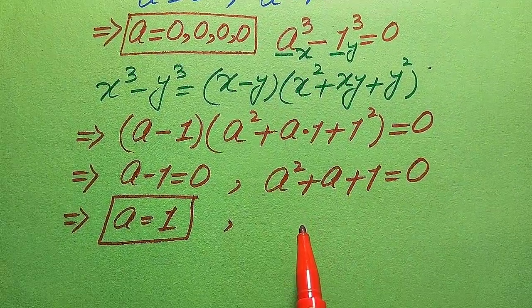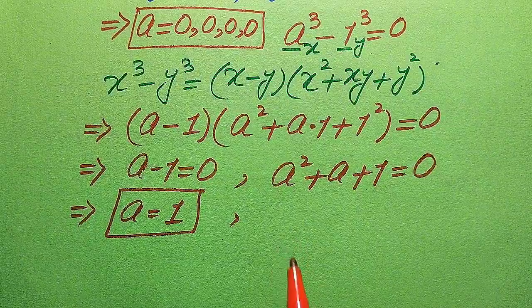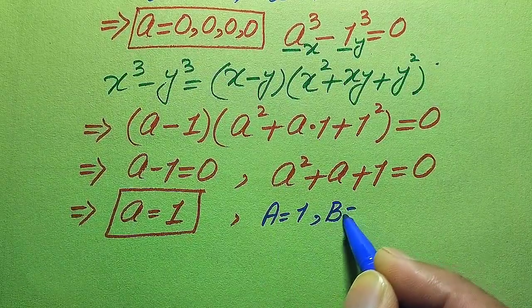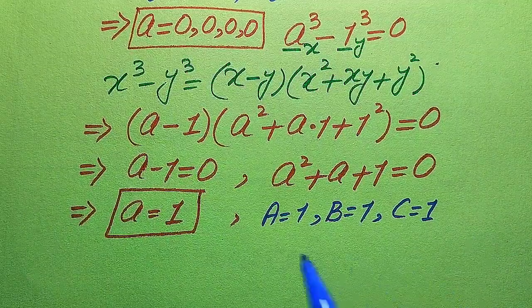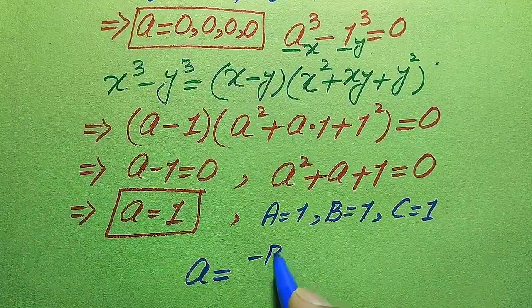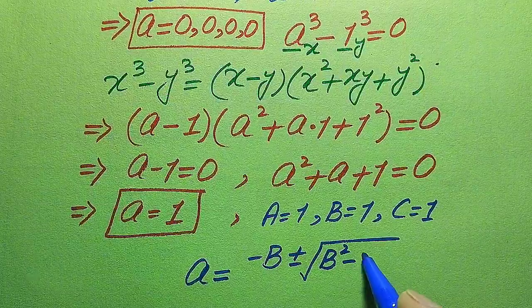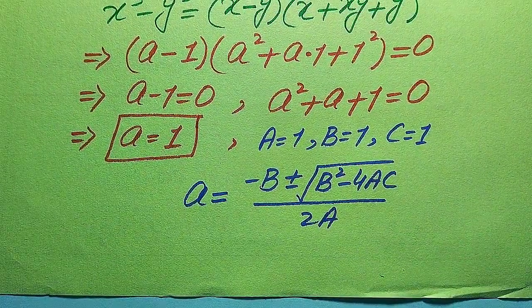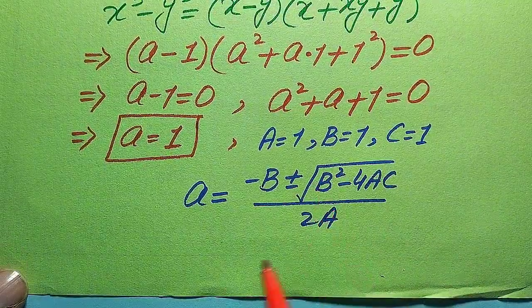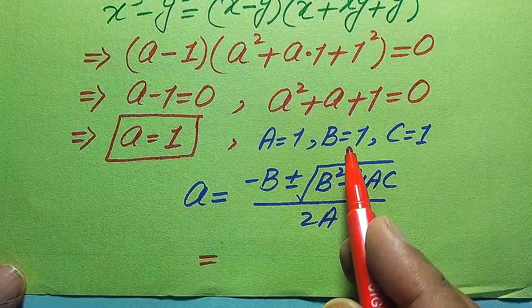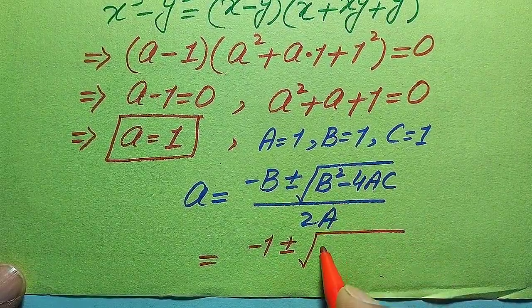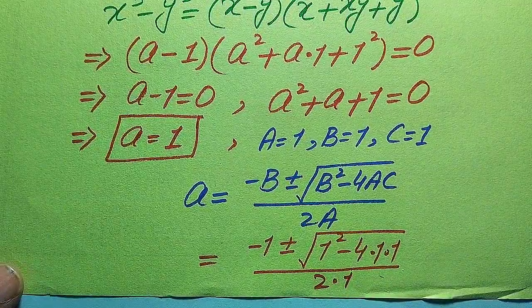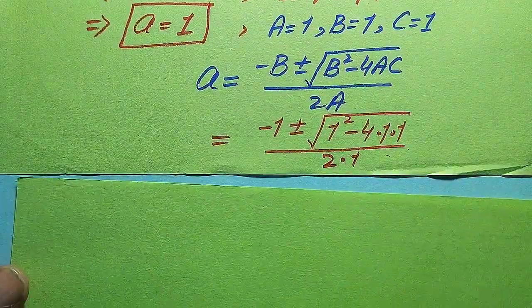Now we need to find the remaining two roots from the quadratic equation a squared plus a plus 1 equals 0. We use the quadratic formula to solve this equation. The coefficients are: capital A equals 1, capital B equals 1, and capital C equals 1. The quadratic formula is: a equals minus b plus or minus square root of b squared minus 4 times ac, divided by 2 times a.